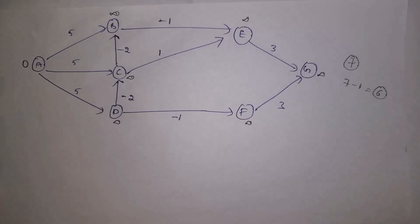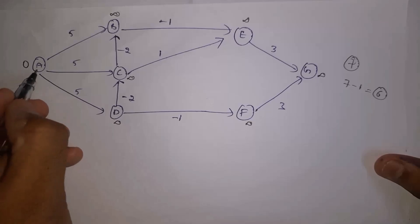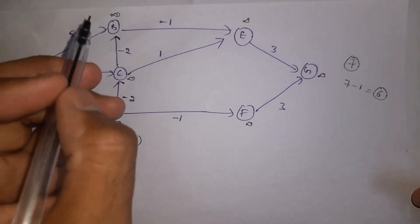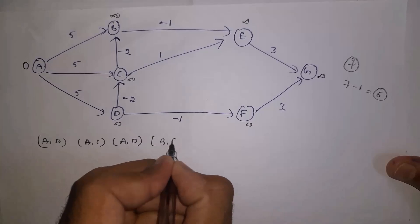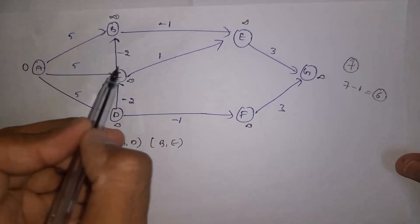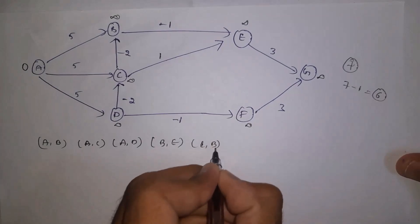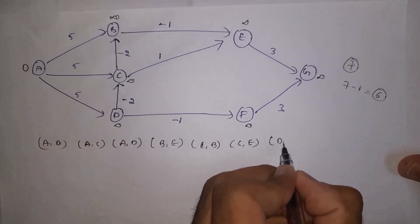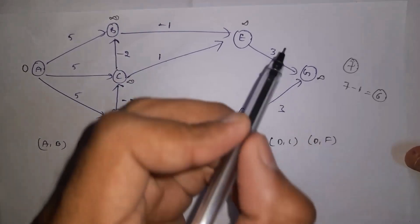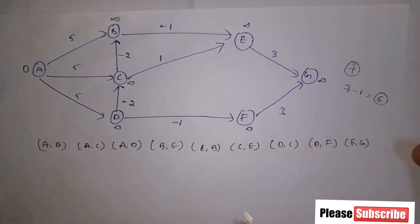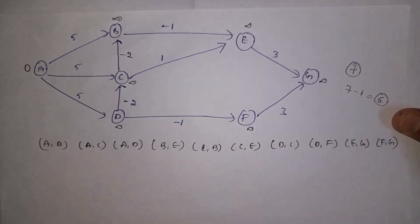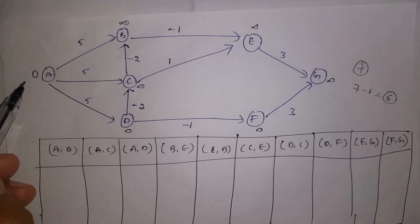Now we write the connections. A is connected to B, A is connected to C, and A is connected to D. B is connected to E. C is connected to B and C is connected to E. D is connected to C and D is connected to F. E is connected to G. F is connected to G. G is the last node — no need to write further.